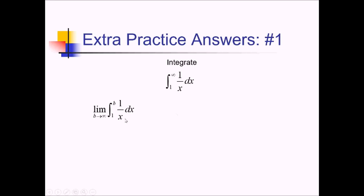The antiderivative here is going to be ln of the absolute value of x, still evaluated from 1 to b using a limit as b approaches infinity. This is going to be ln of b — I didn't bother writing the absolute value because you're going from 1 to positive infinity, so you're guaranteed not to have any negatives inside there. So we've got ln of b minus ln of 1.